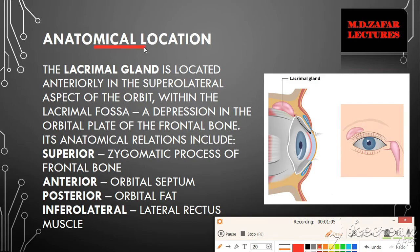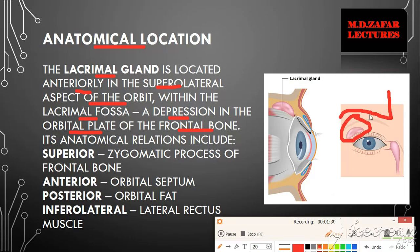Now we will talk about the anatomical location. The lacrimal gland is located anteriorly in the supralateral aspect of the orbit, within the lacrimal fossa. This fossa — the place where the lacrimal gland is present — is a depression in the orbital plate of the frontal bone. The orbital plate of the frontal bone has a supralateral depression where the lacrimal gland is present.